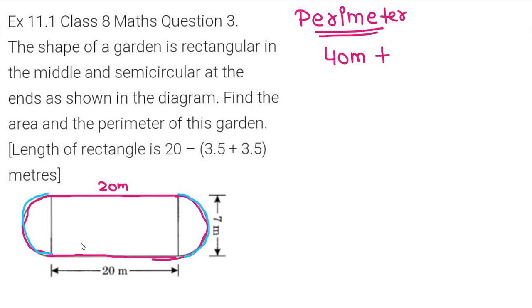Now, these two semicircular ends will form what? They will form a complete circle, right? And the circumference of the whole circle is 2πr. Pi is 22/7.